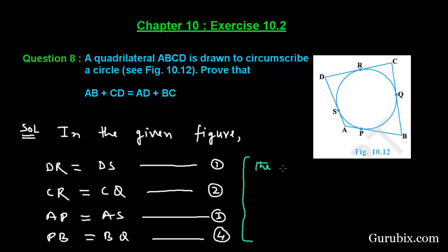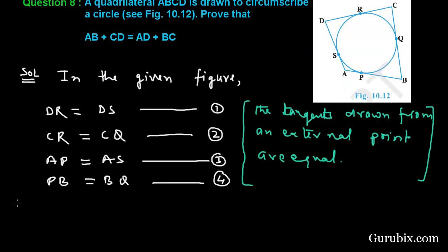And the reason for all these four equations is that the tangents drawn from an external point are equal.